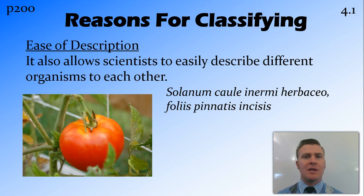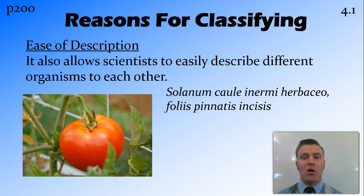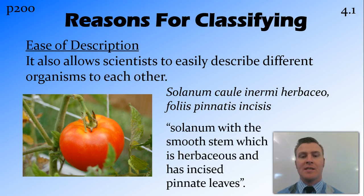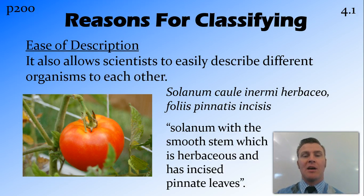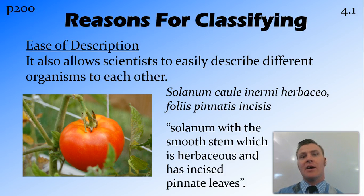An example of this is the tomato, or what we commonly call the tomato, which was once called the Solanum col in Hermae Herbaco folis pinatus incisus, or the Solanum with the smooth stem, which is herbaceous and has incised pinate leaves. They were describing a whole heap of the characteristics of that plant, which are not necessary if it's grouped correctly.